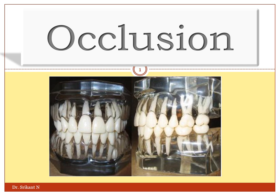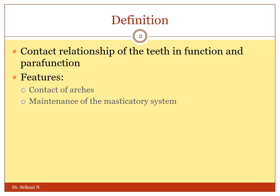Welcome to the lecture on occlusion. The term occlusion means to close. This is what we are going to study about — when the maxillary and the mandibular arches close, leading to an intercuspation of the maxillary and the mandibular teeth. By definition, occlusion is the contact relationship of the teeth in function as well as in parafunctional activities. It means the contact of the teeth of the upper maxillary and the lower mandibular arches, and this is an essential component for maintenance of the masticatory system.